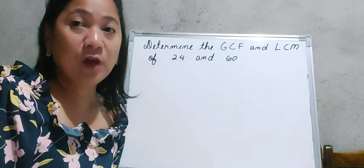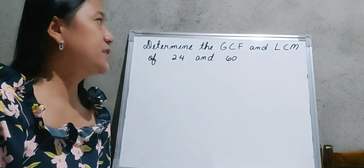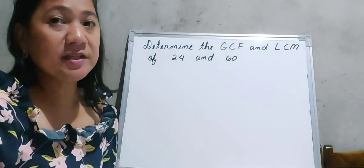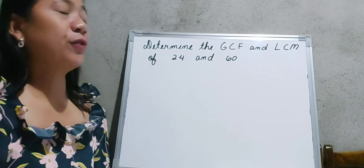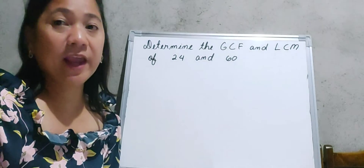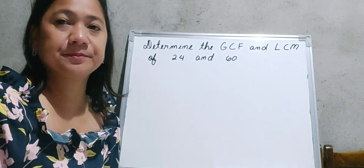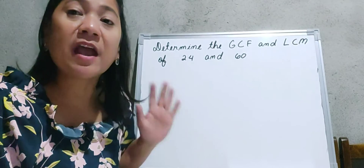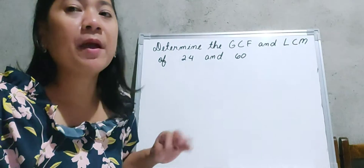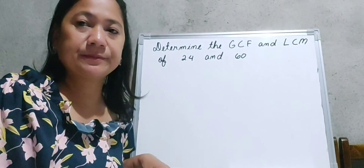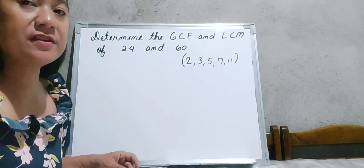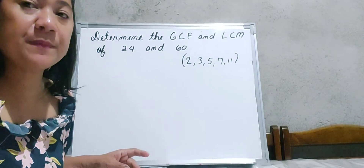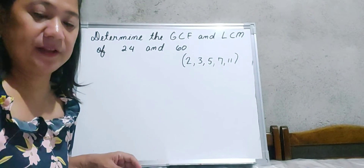For our first activity, let us determine the GCF and LCM of 24 and 60. The first thing we should do is write down the first five prime numbers: 2, 3, 5, 7, and 11.